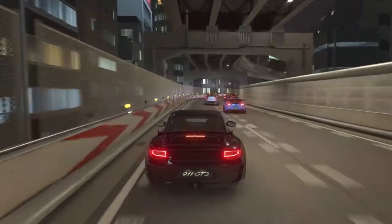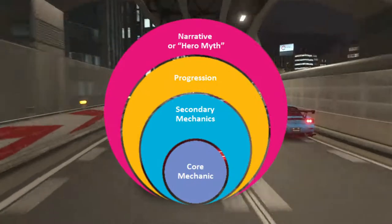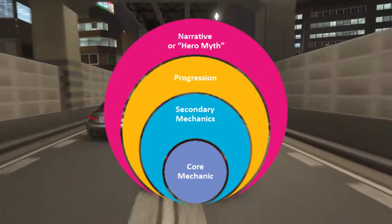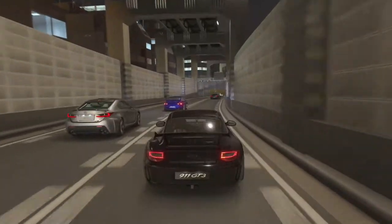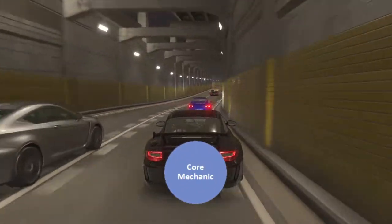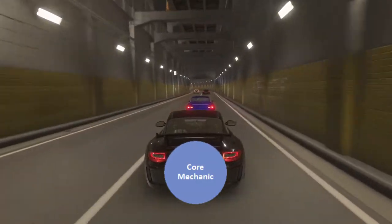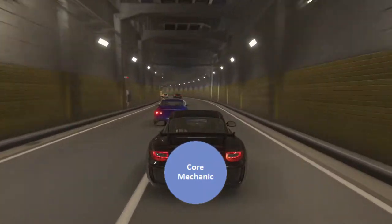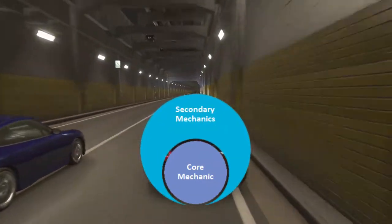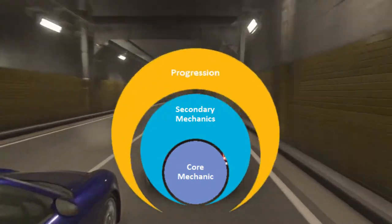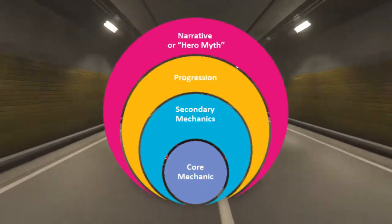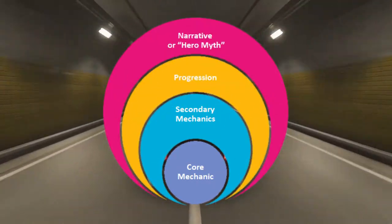There is a diagram called the core diagram, where it shows that the entire game is started from the core mechanic. That's why it's in the very center — it forms a nucleus for your game. The other mechanics form layers around the core, and the narrative forms the very outer layer.